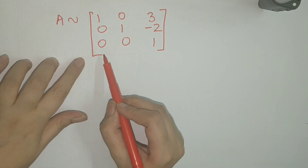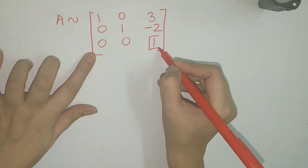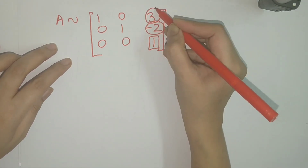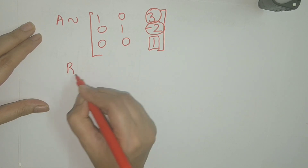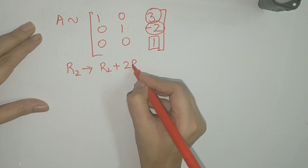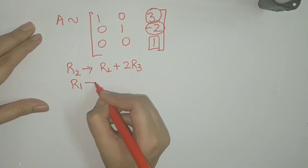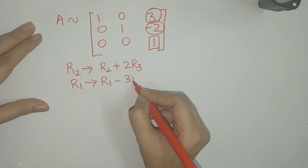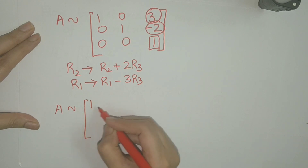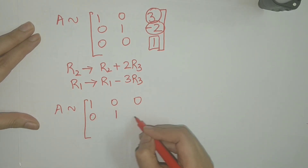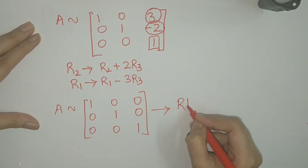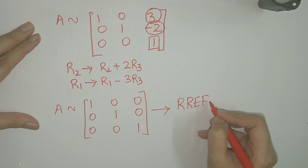Now in the third row, the leading entry is already 1. So we make the entries above the leading entry as 0 by using the row operations R2 → R2 plus 2R3 and R1 → R1 minus 3R3. So A becomes equivalent to [[1,0,0],[0,1,0],[0,0,1]], which is the reduced row echelon form of A.